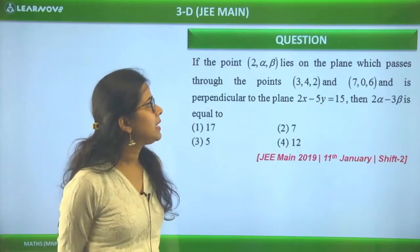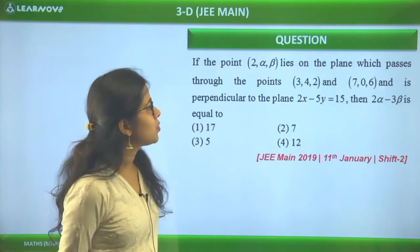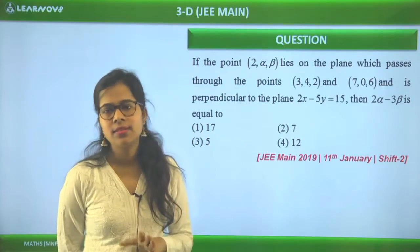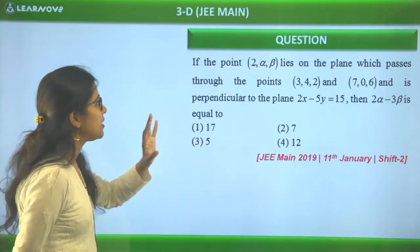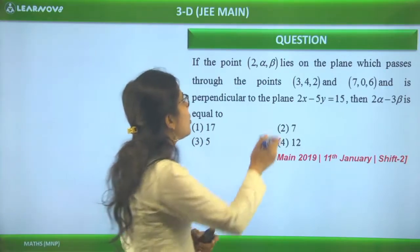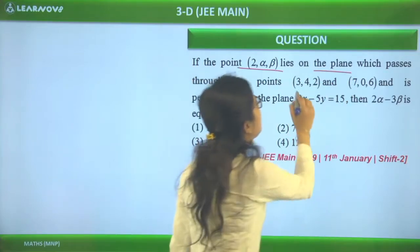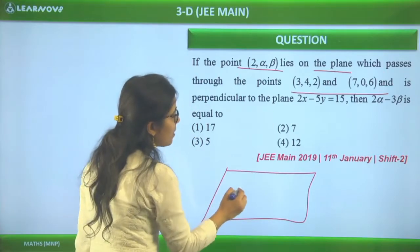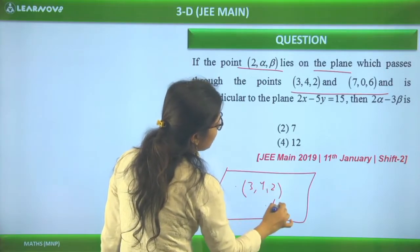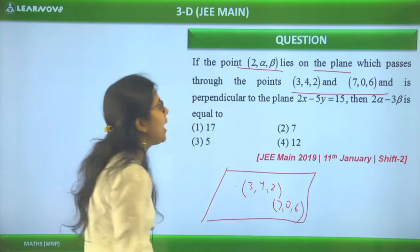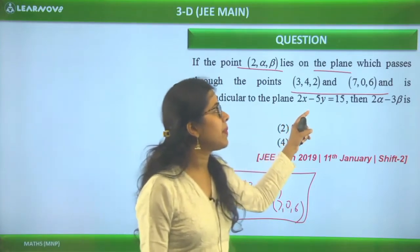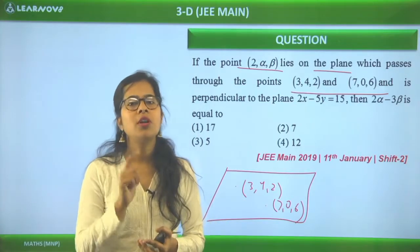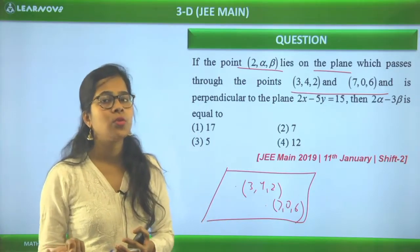Next question from 11th January Shift 2: If the point (2, α, β) lies on the plane which passes through the points (3, 4, 2) and (7, 0, 6), and is perpendicular to the plane 2x - 5y = 15, find 2α - 3β. We need to find the plane equation using two given points and the perpendicularity condition.